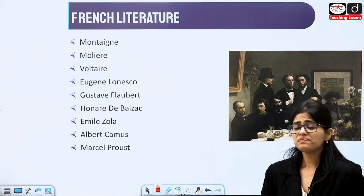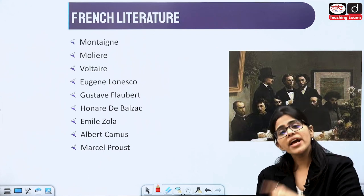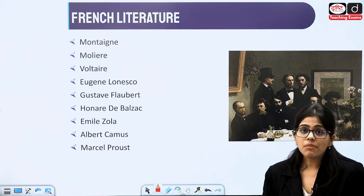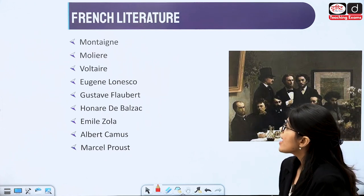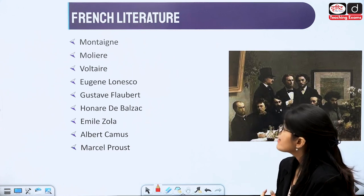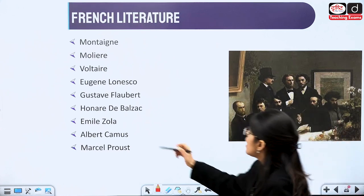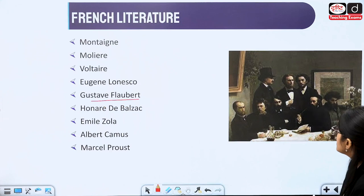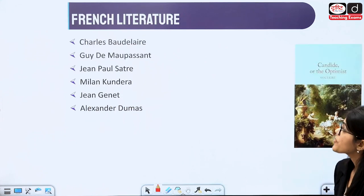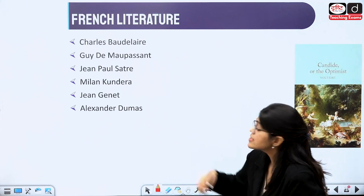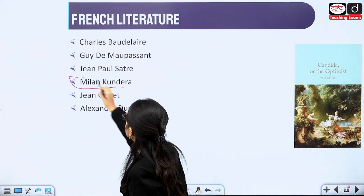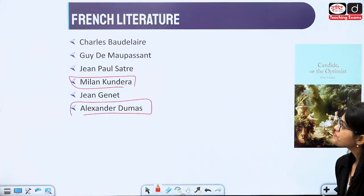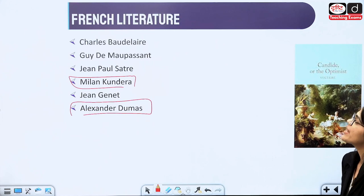Then comes French literature — direct questions are asked from French writers. We have Montaigne, Molière, Voltaire, Gustave Flaubert — asked frequently — Émile Zola, Albert Camus, and Marcel Proust. Some other writers include Milan Kundera, a contemporary writer from whom questions are asked, Alexander Dumas, and Charles Baudelaire.